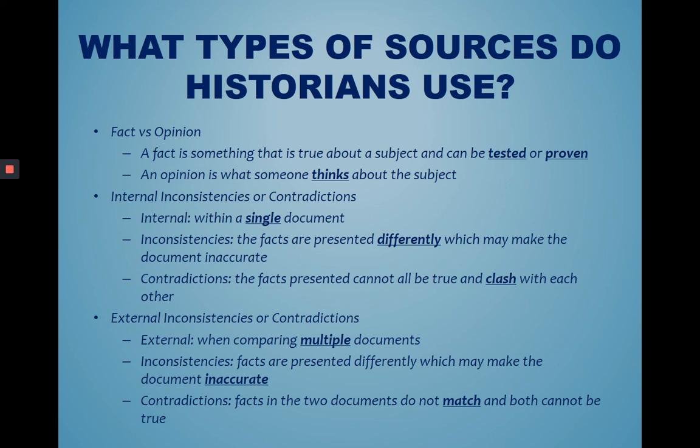Contradictions occur when facts in two documents do not match and both cannot be true. For example, if one letter talks about how wonderful it was staying at Valley Forge — that everybody was healthy and there was a lot of food — and then you read another letter saying a lot of people were dying from illness, they had no food, and it was very cold, those contradict one another and both letters cannot be true. You might have inaccurate information.